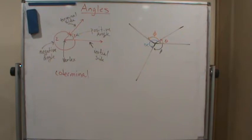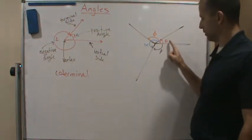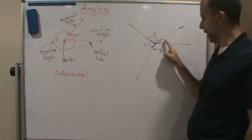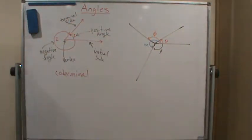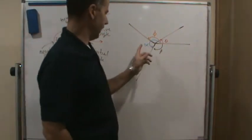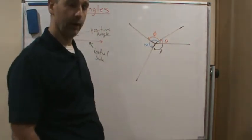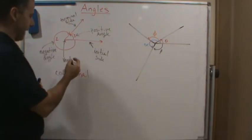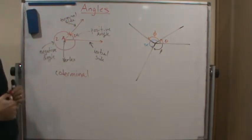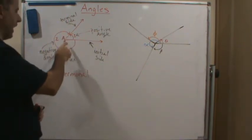Let's look at some other angles we can have. We can use other Greek letters as well. For example, we have theta (θ), then we have the Greek letter phi (φ), and then we have alpha and beta — all of these Greek letters are commonly used for angles. The vertex is normally represented with a capital letter, like capital A.